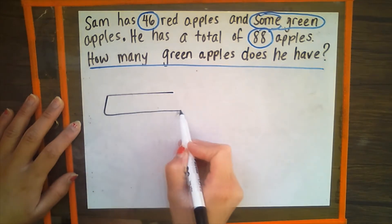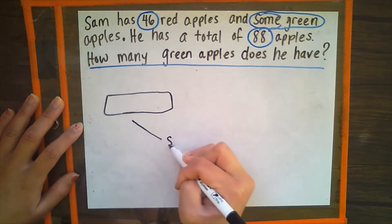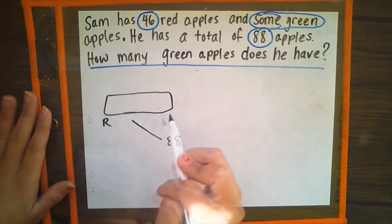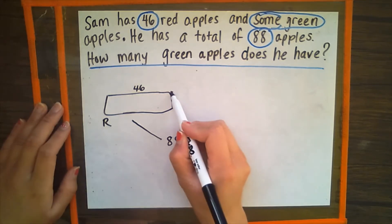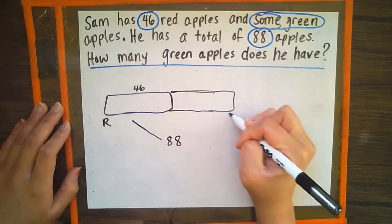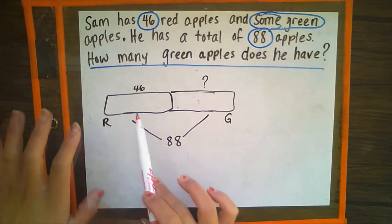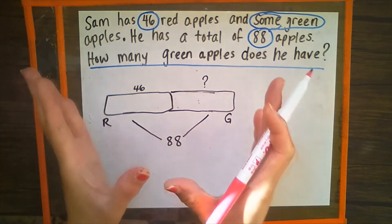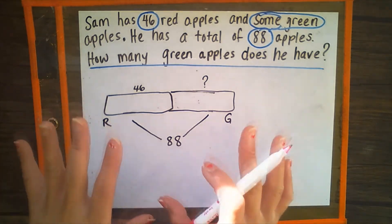With our tape diagram here, we know that Sam had 88 apples total, and we know that these are the red apples — he had 46. We don't know though how many green apples he had. We already know there are 46 red apples, but we don't know how many green apples there are. We do know that overall there are 88 apples. What we're going to do is use our quick 10 drawings within these small boxes to help us figure out how many green apples Sam has.